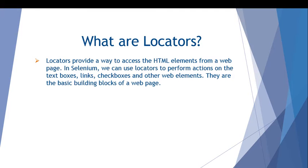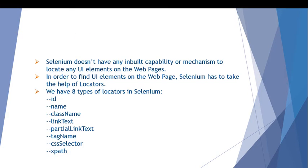So what are locators? Locators provide a way to access HTML elements from a web page. There are different types of web elements like edit boxes, checkboxes, radio buttons, images, and hyperlinks. We need a way to access and interact with them, so locators come into the picture. Using locators we can locate them, interact with them, and perform whatever actions we want.